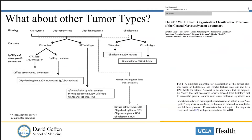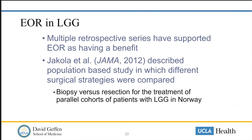This was all extensively studied in glioblastoma, but what about the other tumor types like our lower-grade tumors — IDH mutant tumors, or oligodendrogliomas? Similar things have been demonstrated in what we call low-grade gliomas or IDH mutant non-co-deleted tumors, so not oligodendrogliomas, but our astrocytomas.